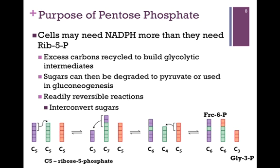The cell does that by recycling the ribose 5-phosphate and building glycolytic intermediates, as illustrated at the bottom of the slide. The C5 structures represent ribose 5-phosphate. We can start with three molecules of ribose 5-phosphate and, through a series of interconversions, convert that to two molecules of fructose 6-phosphate and one of glyceraldehyde 3-phosphate. These sugars can then be degraded to pyruvate or used in gluconeogenesis. These are readily reversible reactions, allowing us to use the pentose phosphate pathway just for the reducing equivalents and then recycle the sugars. It's not important to know the individual steps of these interconversions, just that it is possible and what the final products are: fructose 6-phosphate and glyceraldehyde 3-phosphate.